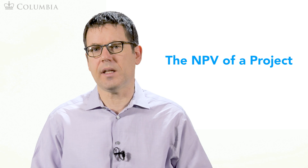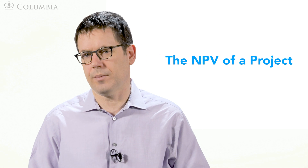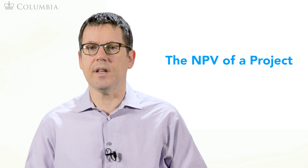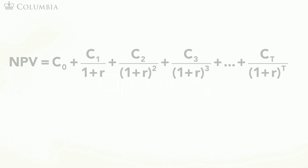We learned the NPV concept in the last module. Recall that the NPV is the sum of all discounted cash flows. I emphasize the word 'all' because the NPV should include all costs and benefits from a project. This is the formula for the NPV that we learned in the last module. The C's are the cash flows of the project at different points in time, and the R is the cost of capital.